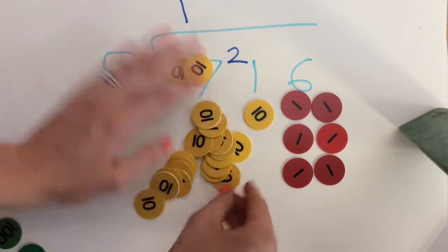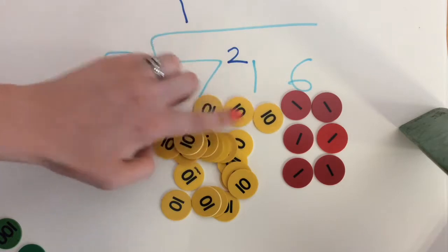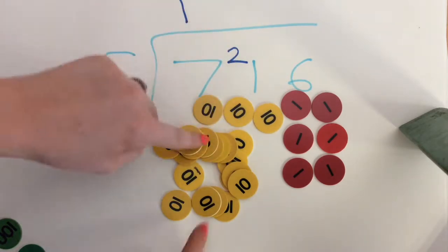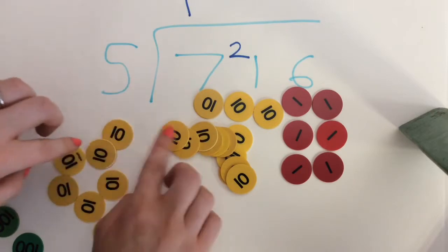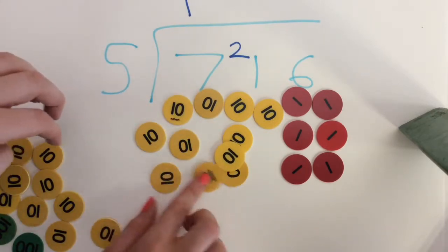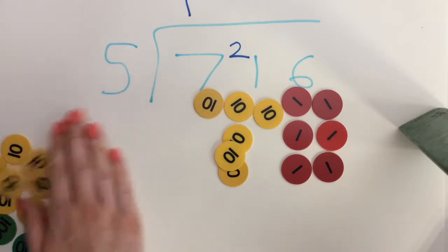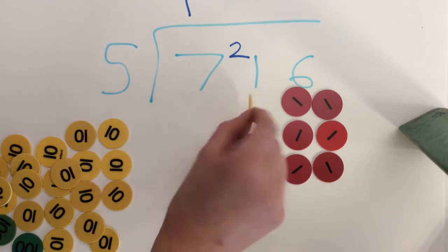So now I've got 21 10s and I'm going to ask how many groups of five can I get out? So one, two, three, that's four groups of five gone. Four times five is 20.